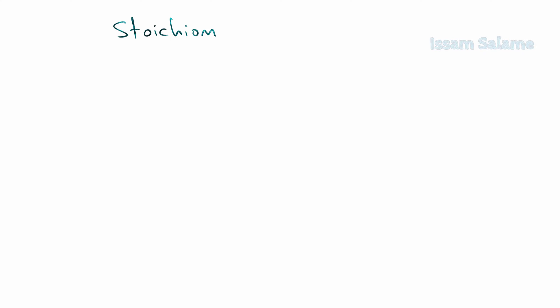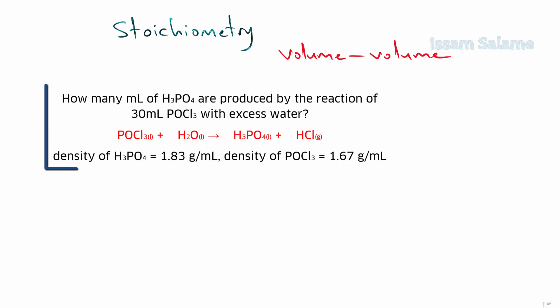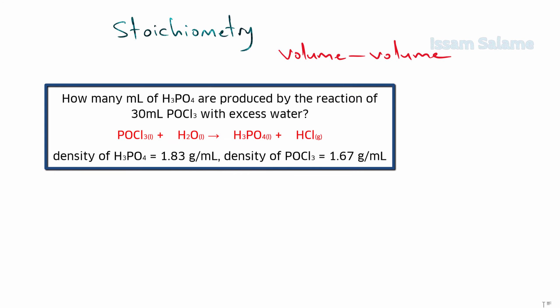In this video you are going to practice stoichiometry volume-volume exercises like the following example: how many milliliters of H3PO4 are going to be produced by the reaction of 30 milliliters of POCl3 with excess water?